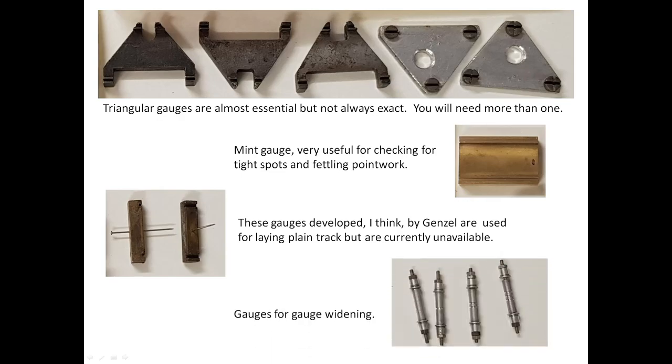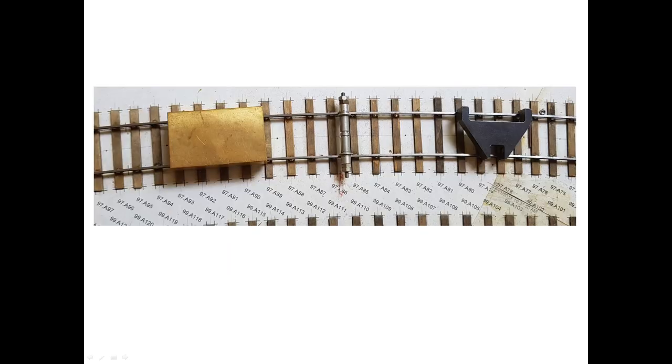And these are very useful for checking gauge widening on curves. The plain gauge on the left is 18.83mm. The next, with one band, is 18.93mm, then 19.03mm and 19.13mm. Here we see three of the gauges on curved rivet and ply track.